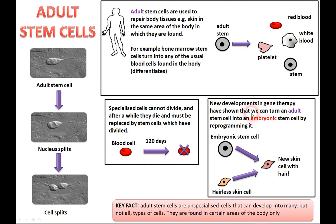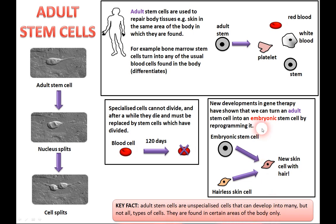New developments in gene therapy have shown that we can turn an adult stem cell into an embryonic stem cell by reprogramming it. We take an embryonic stem cell and a hairless skin cell, mix them together in a clever way, and make a new skin cell with hair. The key fact is adult stem cells are unspecialised cells that can develop into many but not all types of cells — not quite as good as embryonic ones — and they're found in certain areas of the body only.